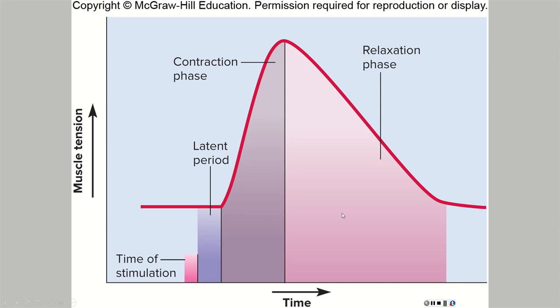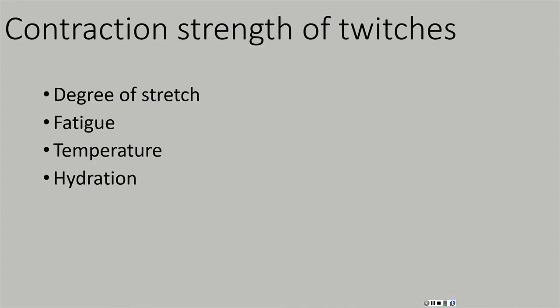This happens extremely quickly and does not happen in the body. When we're contracting a muscle, we send repeated action potentials. A muscle twitch is something we could do in a lab by applying a single action potential to a muscle cell. Now let's look at some other things that influence contraction strength of those twitches and overall contraction strength of the muscle.